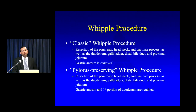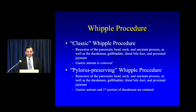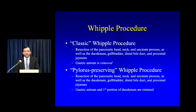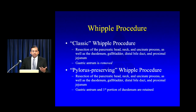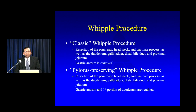When talking about a Whipple procedure, there are really two types you should be familiar with. There's the classic Whipple, which entails resecting the pancreatic head, neck, and uncinate process, as well as the duodenum, the gallbladder, the distal bile duct, and the proximal jejunum, and you remove the gastric antrum. Then there's the pylorus-preserving procedure, where you resect all of the above but retain the gastric antrum and the first portion of the duodenum. In a classic Whipple you have a gastrojejunostomy, whereas in a pylorus-preserving procedure you typically have a duodenojejunostomy.